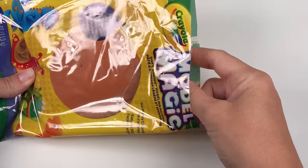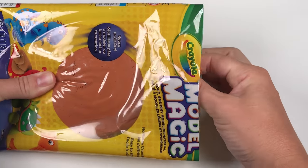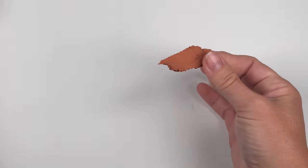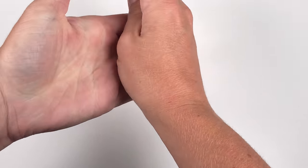Start by taking the clay of your choice and rolling it into a ball. We're using the AirDry Model Magic, and it's already the color of hot dogs, so we don't have to paint it.